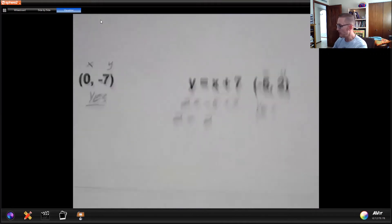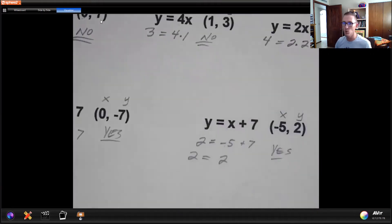2 is equal to negative 5 plus 7. So all you're going to do is figure out if it makes a true statement. And then you are going to say yes or no based on what you see. So a very quick and brief lesson on does an ordered pair satisfy the equation.